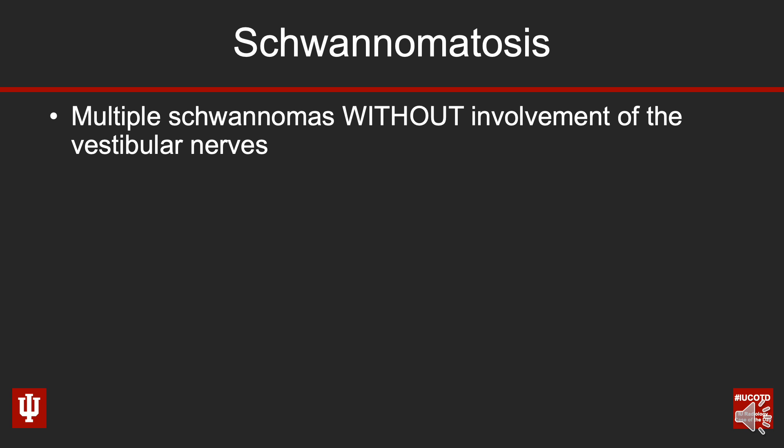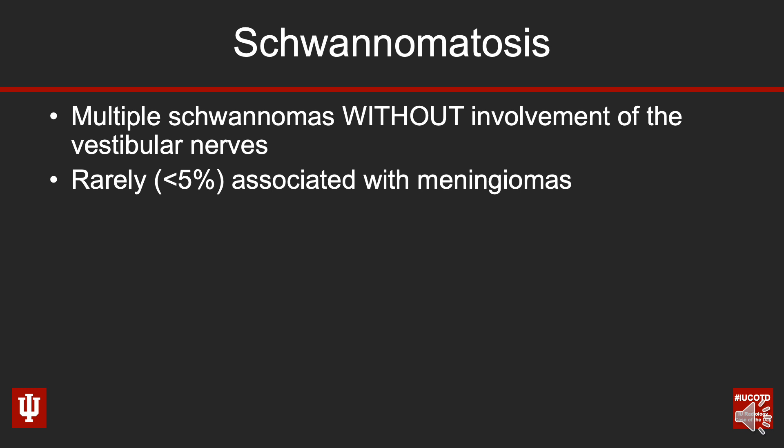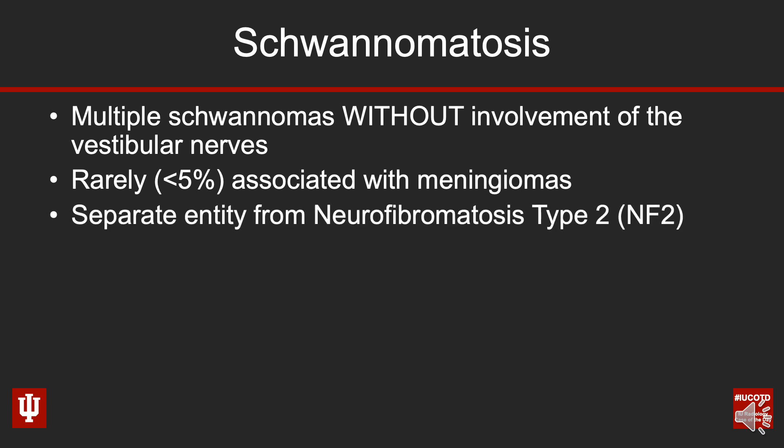Our top diagnosis here was schwannomatosis. These patients have multiple schwannomas without involvement of the vestibular nerves. Bilateral vestibular nerve involvement is essentially a pathognomonic feature of NF2, and in schwannomatosis you cannot have a schwannoma involving the vestibular nerve. Despite the name, this is somewhat poorly named — more recent studies have shown that about 5% or fewer of these patients may also have meningiomas, but this is an entirely separate disease entity from neurofibromatosis type 2.